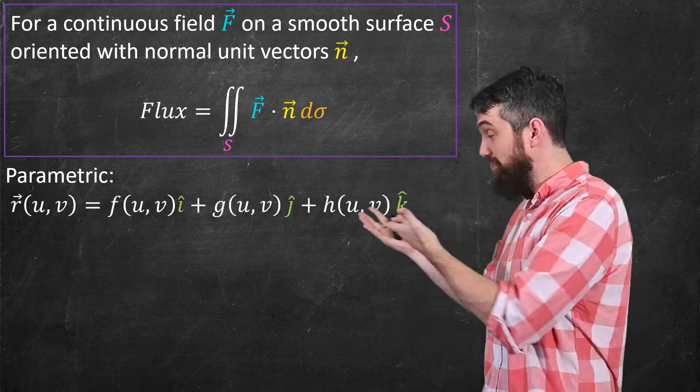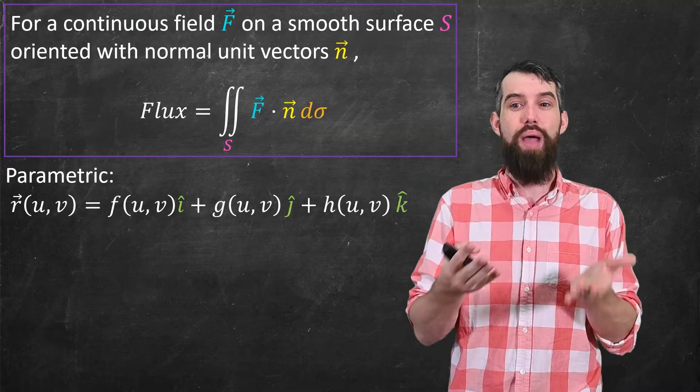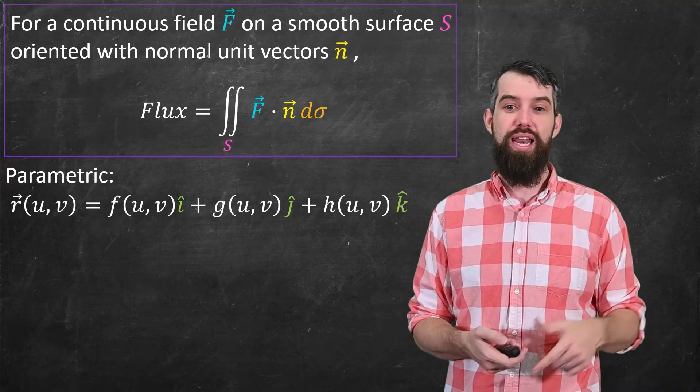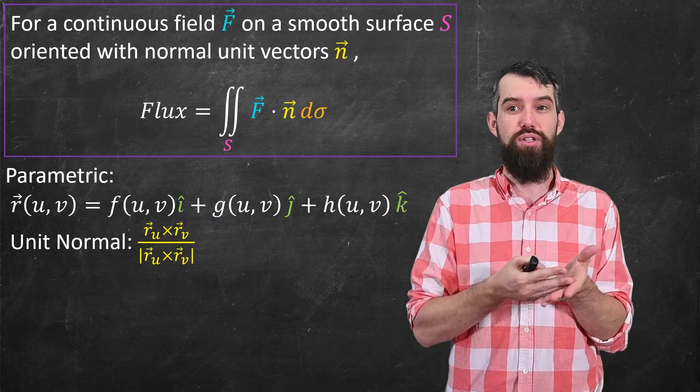So first, let's consider what happens if my surface is described parametrically as a position function of u and v in its three different components. Well, one of the things we've seen before is that a choice for the unit normal is r u cross r v over the length of r u cross r v.